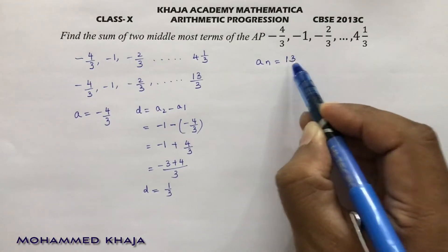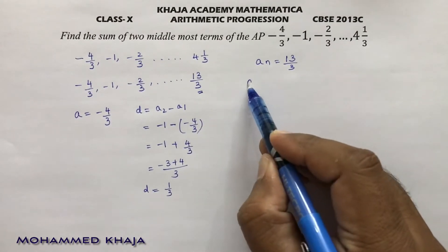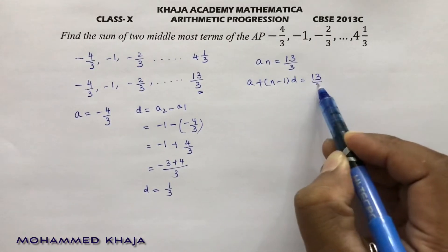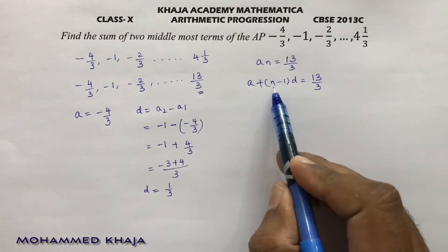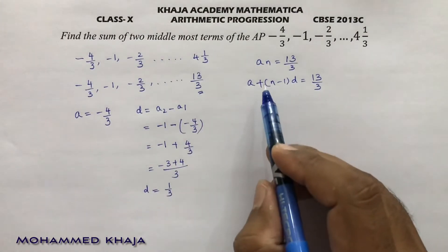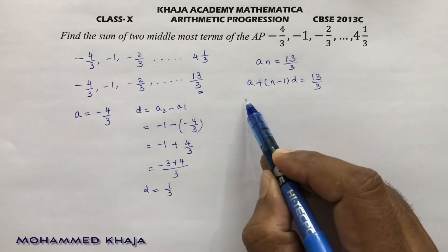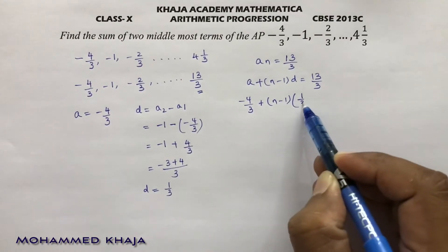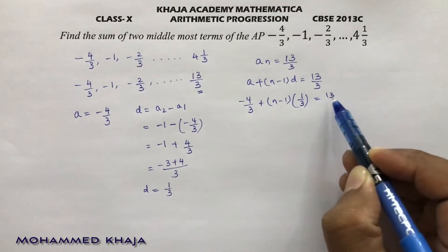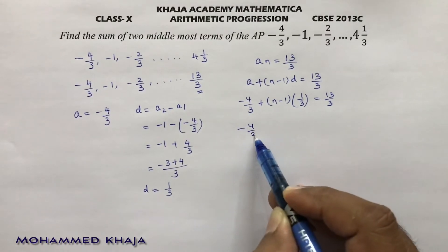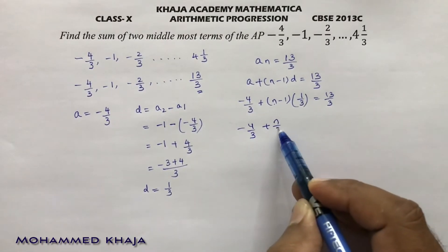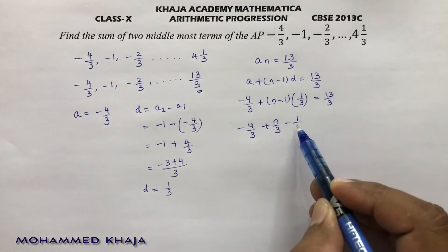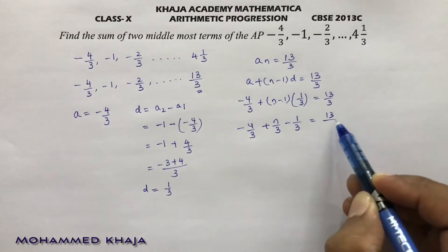The nth term (last term) is 13 by 3. The formula is AN = A plus (N minus 1) into D. Substituting A = minus 4 by 3 and D = 1 by 3: minus 4 by 3 plus (N minus 1) into 1 by 3 equals 13 by 3. Expanding: minus 4 by 3 plus N by 3 minus 1 by 3 equals 13 by 3.